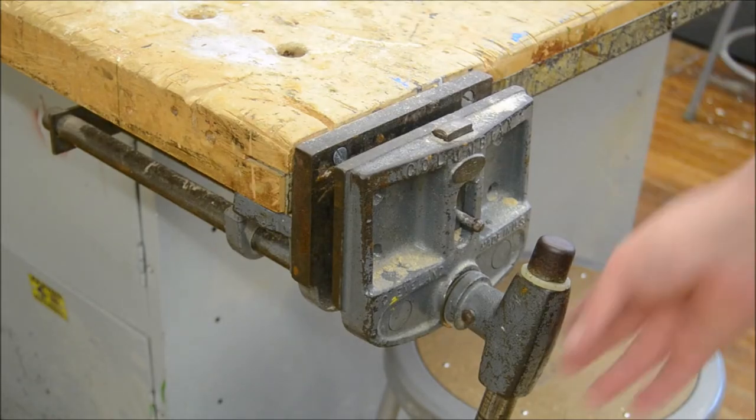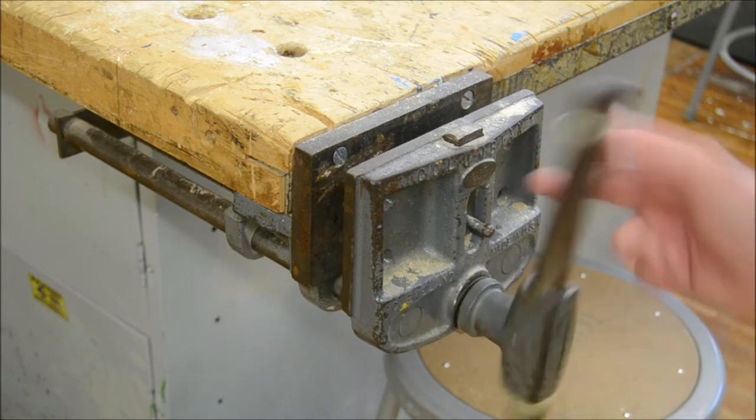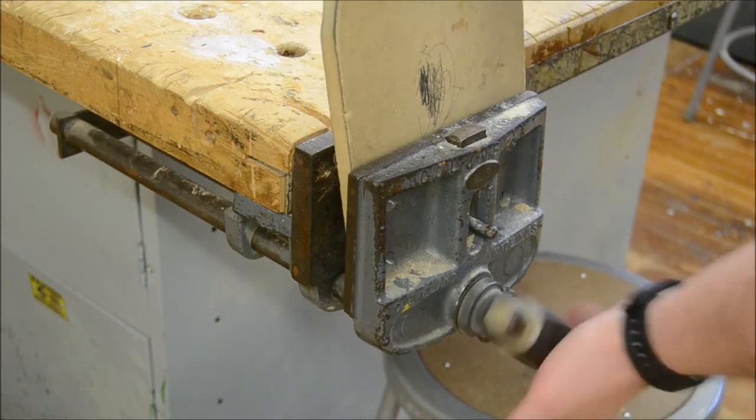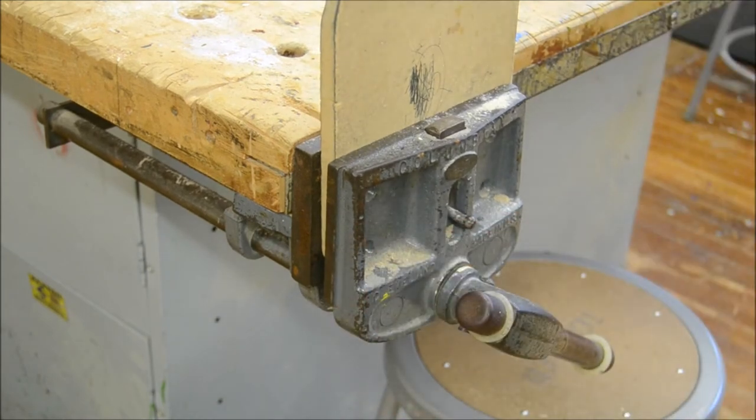The bench vise. This is a clamp that's built into the workbench. We can use this to clamp a piece of wood up and down to work on it.